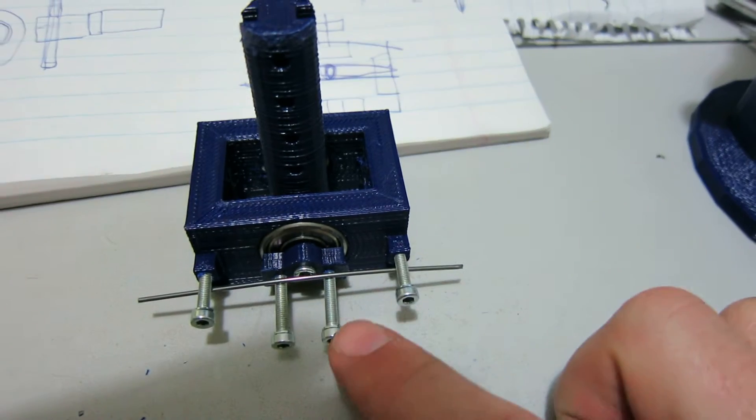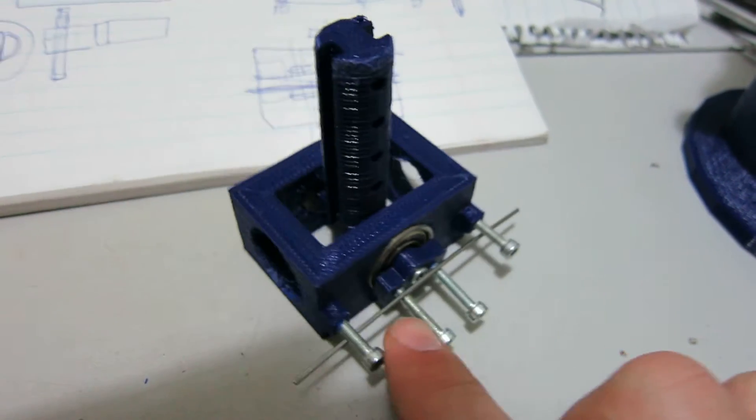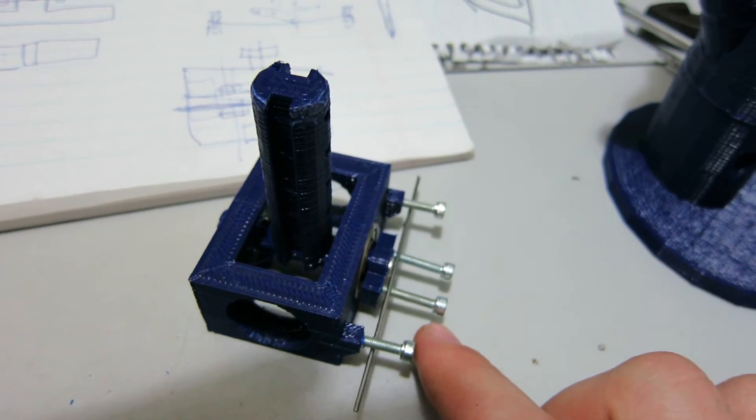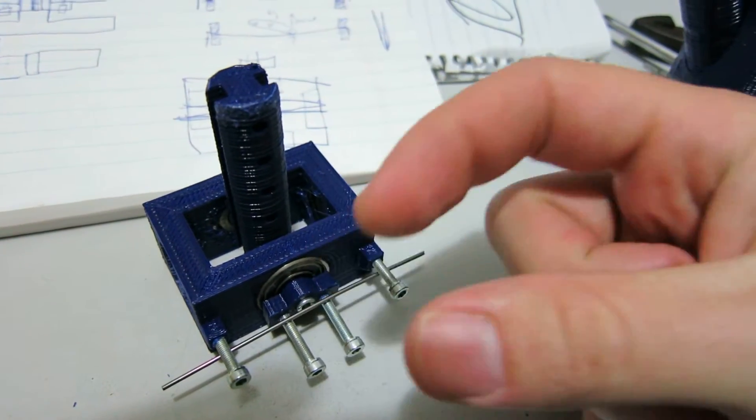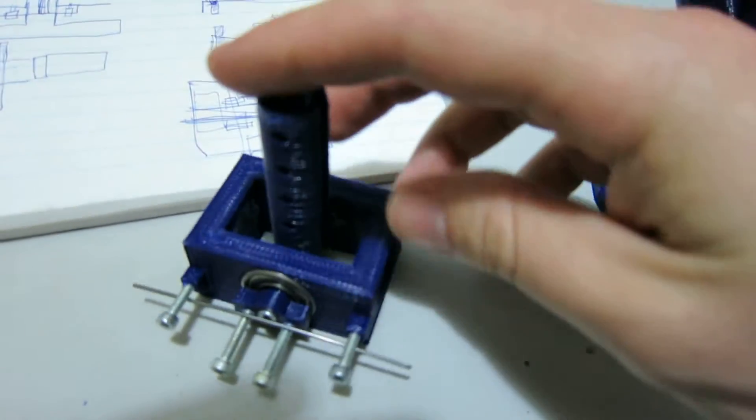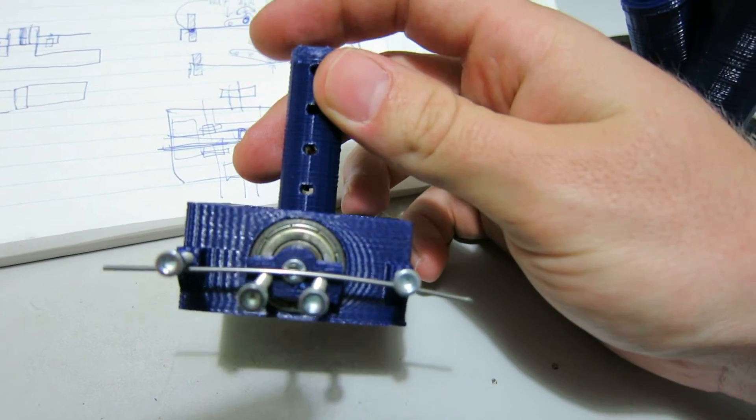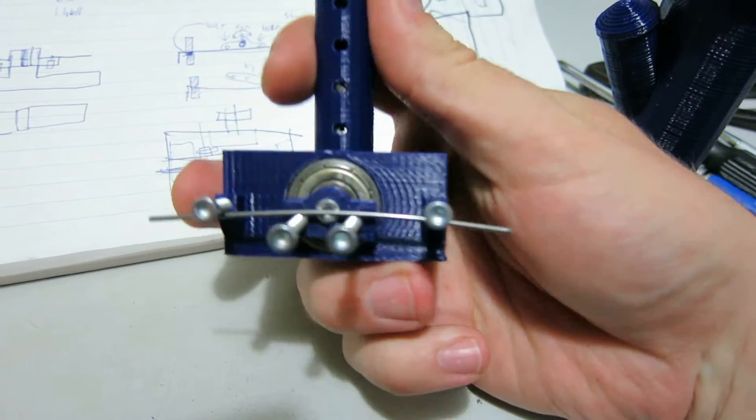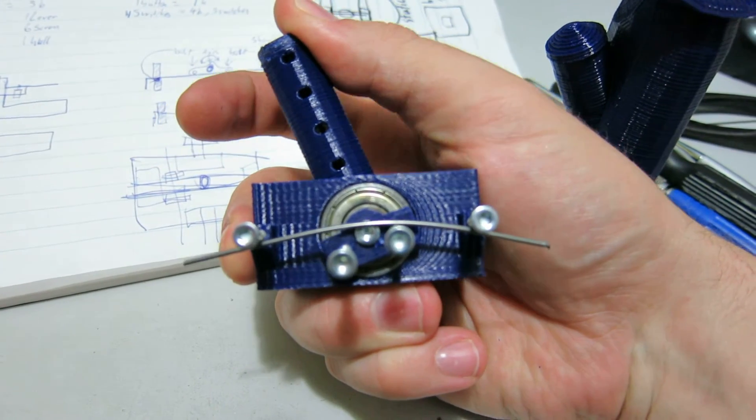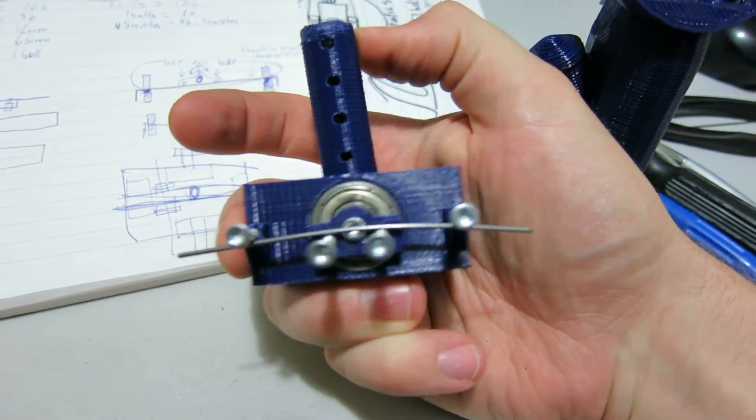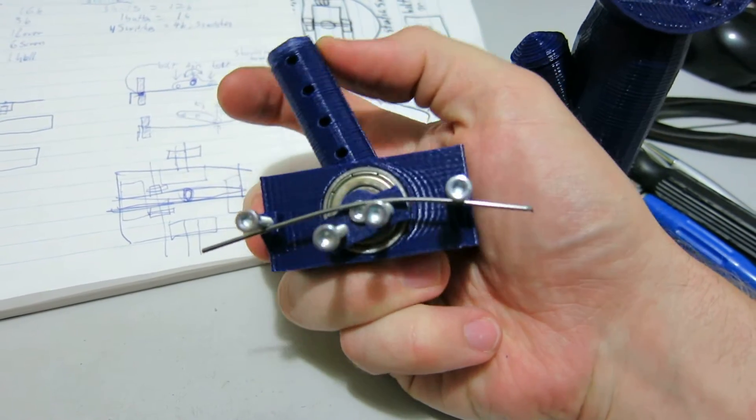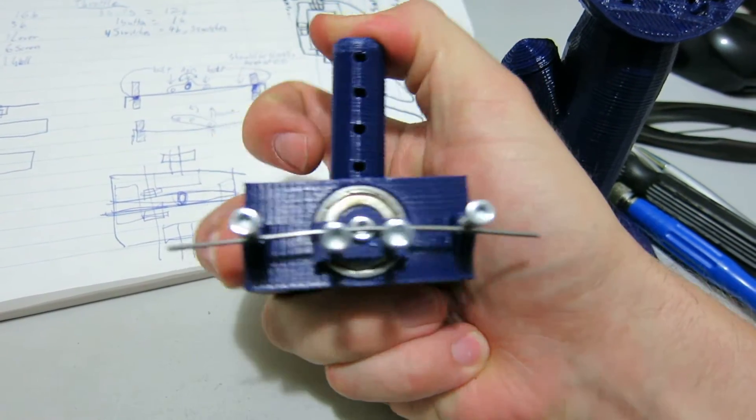I'll obviously have those bolts cut to length so they don't stick out so far in the final version, and I'll probably flip this around so there's not as many twisty forces on it if they can be avoided. But this is essentially the gimbal that sits at the bottom of the stick. As you can see, if I twist it to the side, it bends the piece of piano wire up and forces it back to the neutral position.